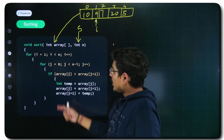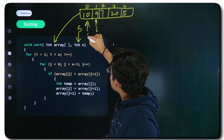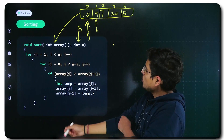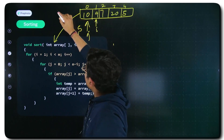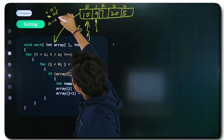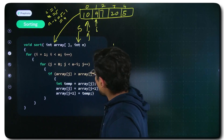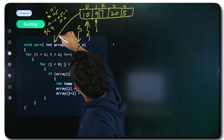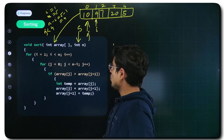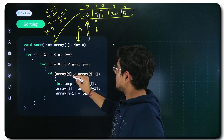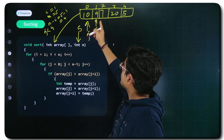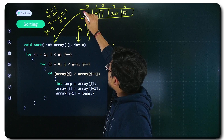When you come to j, it points to index 0 and runs till n minus i. Since i is 1 and n is 5, n minus i equals 4, so the condition becomes j less than 4 — meaning j runs till index 3. When these two loops run, you check: is array[j] greater than array[j+1]? Here array[j] is index 0 and array[j+1] is where i lies.